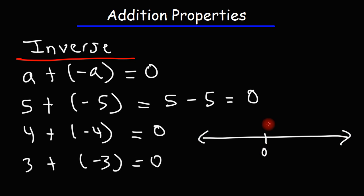So if you travel 3 units to the right, basically you're adding 3, you'll get to 3. And then if you add negative 3, which is the same as subtracting by 3, you go back to where you started. So you basically had a net result of not going anywhere. You end up back at 0. So that's how that works.